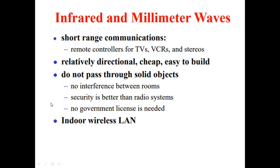Next are infrared and millimeter waves, used for short-range communications. For example, in our homes we use TV remotes — when you press the remote, a particular ray is passed which touches the sensor on the TV screen and operates it. These infrared rays are used for TVs, VCRs, and stereos. They are relatively directional, cheap, and easy to build. They will not pass through solid objects, so they do not interfere between rooms, offering better security than radio systems. No government license is required, and use is limited to indoor wireless LAN.